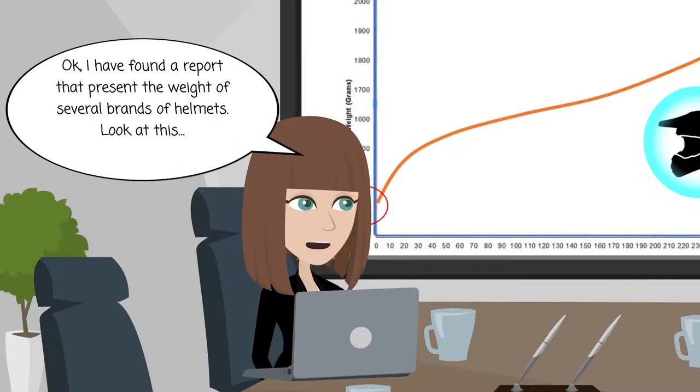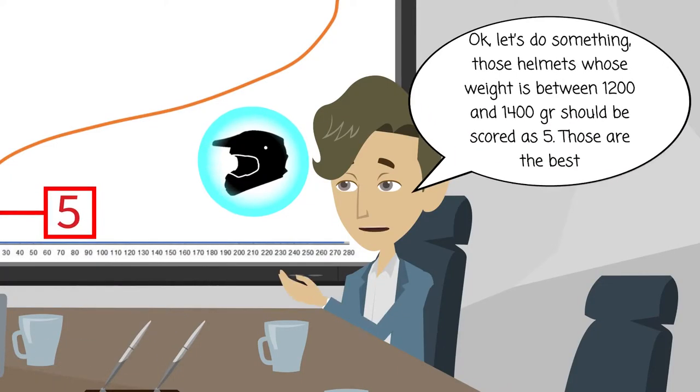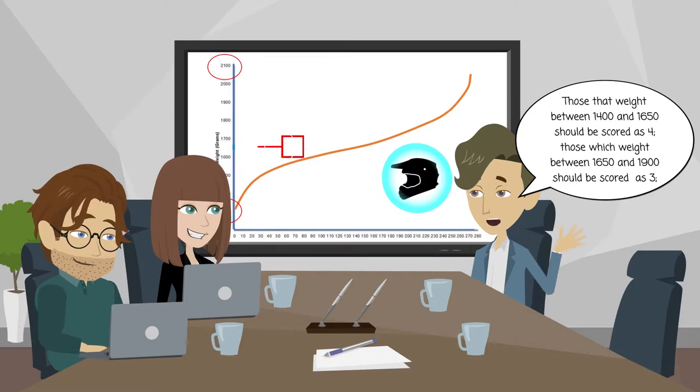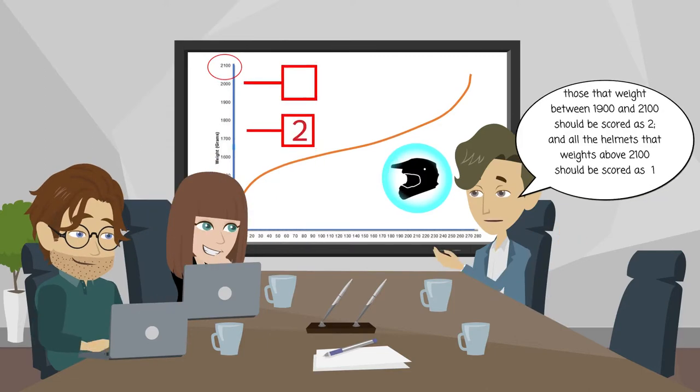Okay, I have found a report that presents the weight of several brands of helmets. Look at this. Okay, let's do something. Those helmets whose weight is between 1200 and 1400 grams should be scored as 5. Those that weight between 1400 and 1650 should be scored as 4. Those which weight between 1650 and 1900 should be scored as 3. Those that weight between 1900 and 2100 should be scored as 2. And all the helmets that weight above 2100 should be scored as 1.